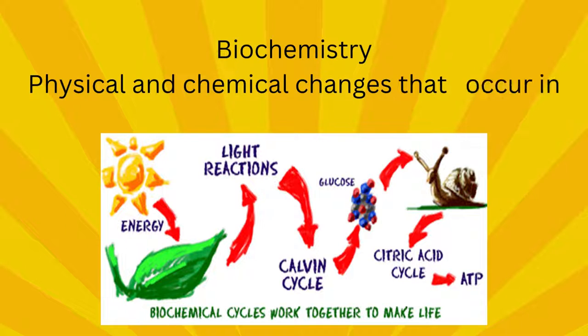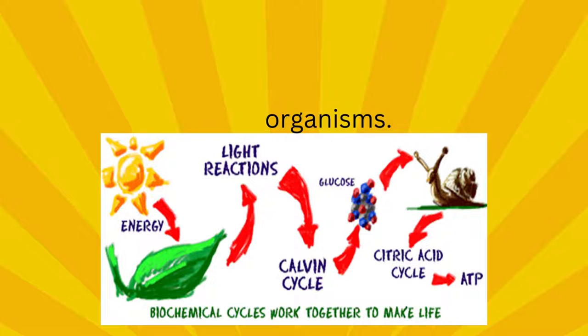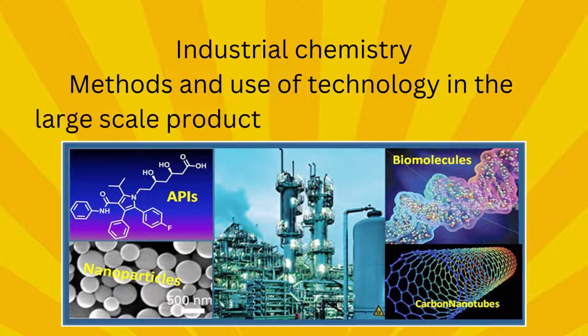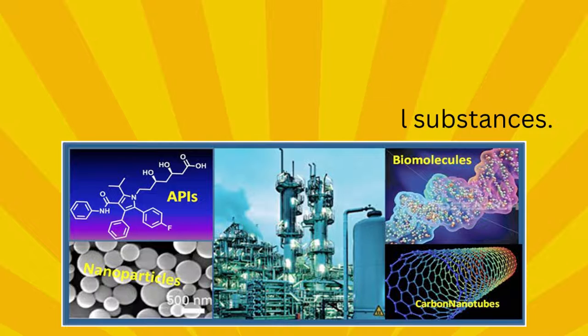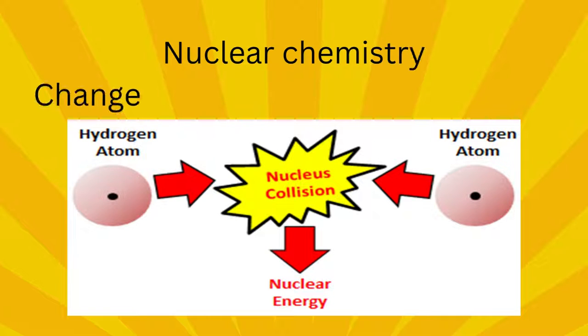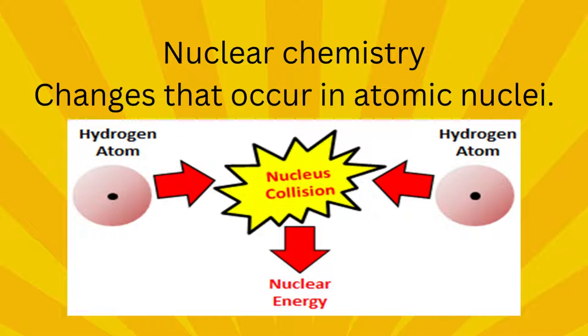Biochemistry: physical and chemical changes that occur in living organisms. Industrial chemistry: methods and use of technology in the large-scale production of useful substances. Nuclear chemistry: changes that occur in atomic nuclei.